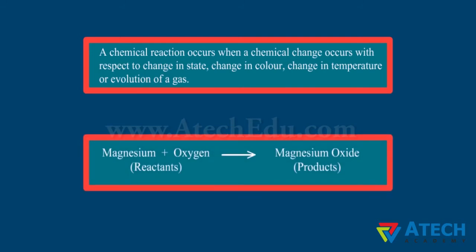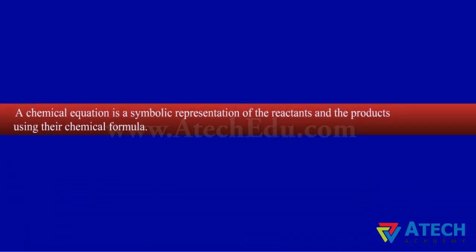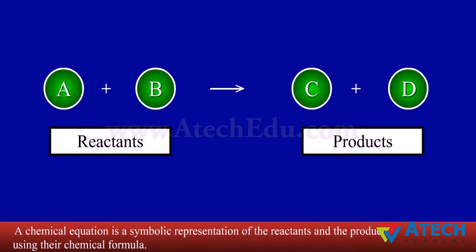An example of a chemical reaction is the reaction of magnesium with oxygen to form magnesium oxide. A chemical equation is a symbolic representation of the reactants and the products using their chemical formulae. On the left hand side are the reactants and on the right hand side are the products.